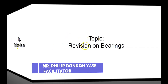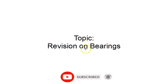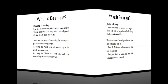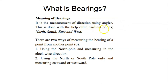In today's lesson we are going to look at the topic bearings — a revision on the topic. Bearings is the measurement of direction using angles; in other words, bearings is the angular distance between two or more points within a plane. This is done with the help of the cardinal points, which we know to be north, south, east, and west. There are two ways of measuring the bearing of a point from another point.